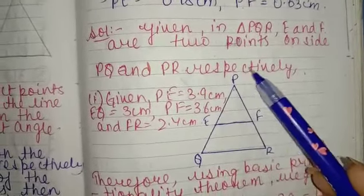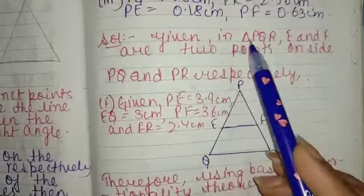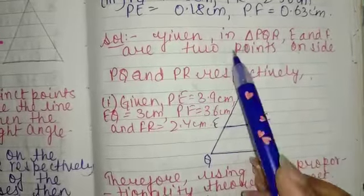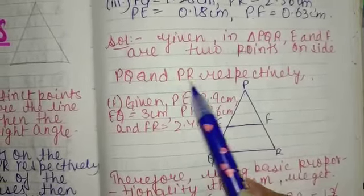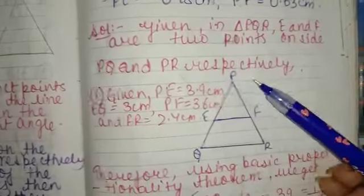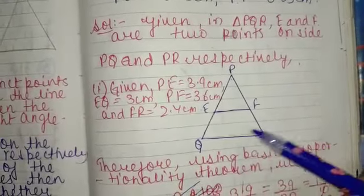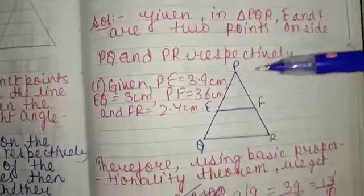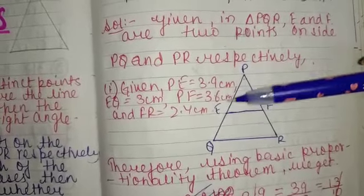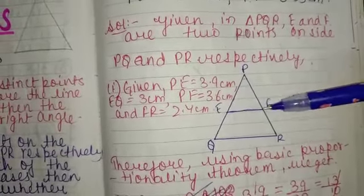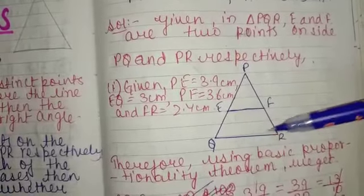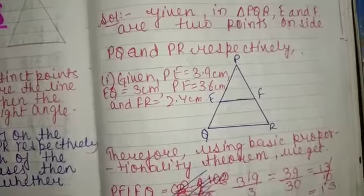First of all, we will write given: in triangle PQR, E and F are two points on the sides PQ and PR respectively. After that, we will draw the triangle first. We will suppose that this is P, this is E, this is F. Here is Q, here is R.